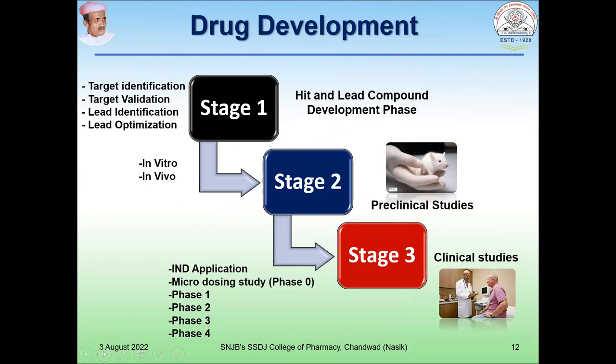Then we do pre-clinical studies, which can be in vitro studies or in vivo studies. After pre-clinical studies, we submit an application for the IND, and after getting approval from the FDA, we move towards clinical studies, which is the third stage of drug development. In that we do micro-dosing study, which is a phase zero study, followed by phases one, two, three, and four of clinical trials. After that, we do post-marketing surveillance, which is useful for drug monitoring.